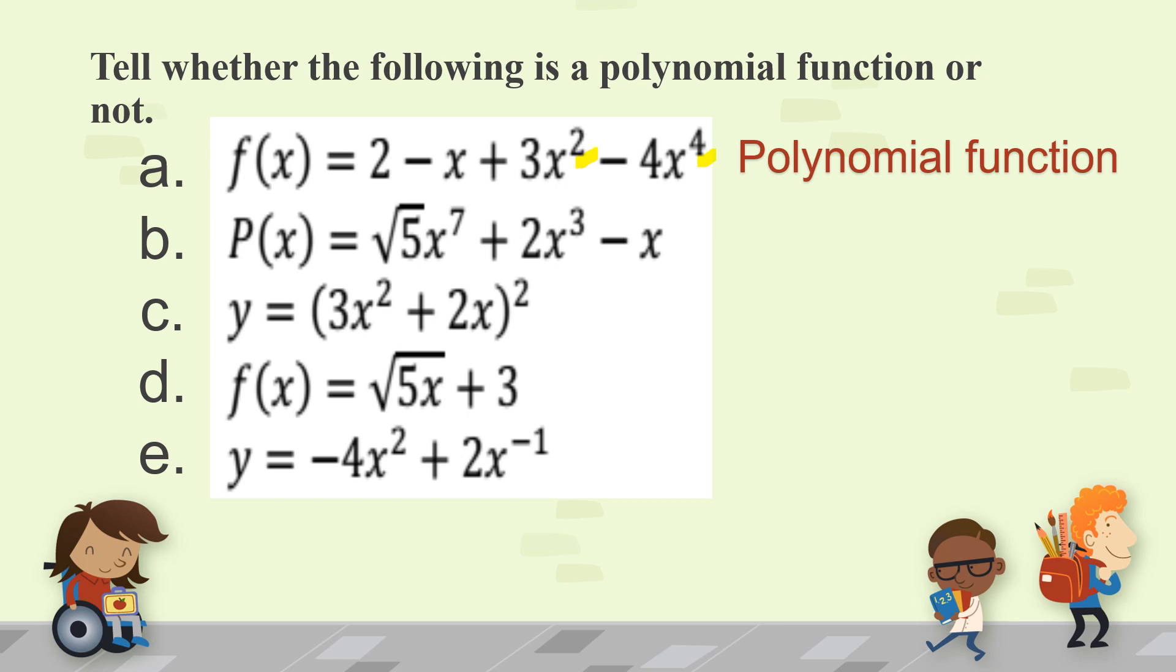Let's go to letter b. f(x) = fifth root of 5, x⁷ + 2x³ - x. Is this a polynomial function or not? Answer is a polynomial function. So, if you look at our given, the fifth root of 5 is the only one with a radical. x raised to 7 is not included in the radical. So, it's a polynomial function.